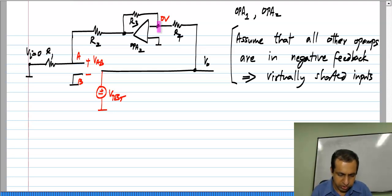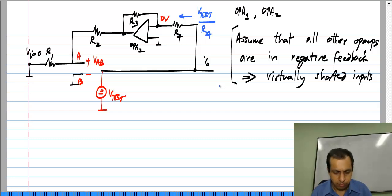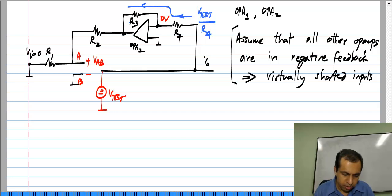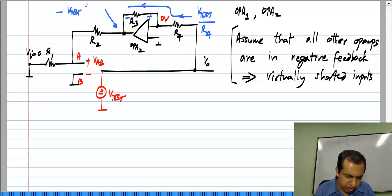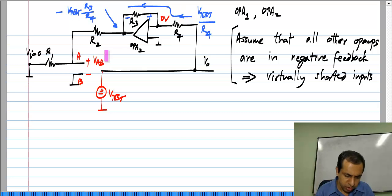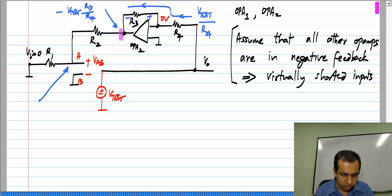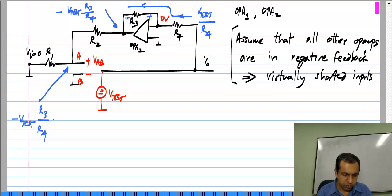We have applied V_test here and this point is at zero. So a current V_test / R4 flows that way, and of course nothing flows into the input of the op amp, so the same current will flow into R3 as well. The voltage drop across R3 in this direction is this current times R3. So the voltage at this point is minus V_test × R3 / R4. And now between this point and V_AB, we just have a voltage divider consisting of R2 and R1. So the voltage here will be minus V_test × R3/R4 times the divider ratio R1 / (R1 + R2).